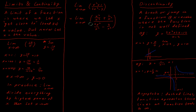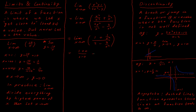Now it becomes apparent why we did that as we do a little bit of simplifying. x squared divided by x squared is 1. Plus 1 over x squared. All over: 2x squared over x squared is just 2, minus 3 over x squared. Once we've done that, let x tend to infinity. As x tends to infinity, 1 over x squared tends to 0, and 3 over x squared tends to 0. So the only stuff that matters is our 1 and 2, giving us 1 plus 0 over 2 minus 0, which equals one half.